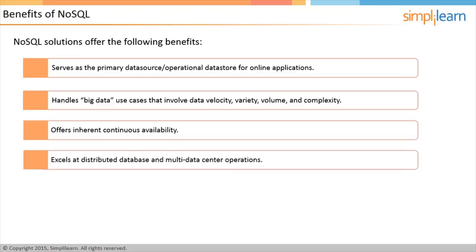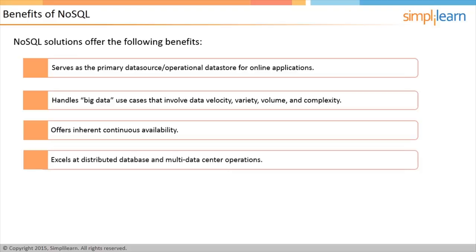Multi-data Center Capability: Business enterprises own highly distributed databases spread across multiple data centers and geographic locales. Data replication is offered by all legacy RDBMS, but none can offer a simple mode of data distribution between various data centers without performance issues. A good NoSQL enterprise solution must support multi-data center deployment and provide configurable options to maintain a balance between performance and consistency.